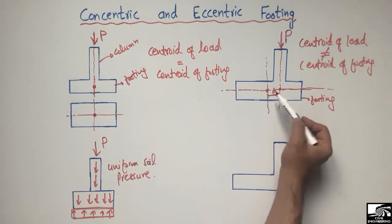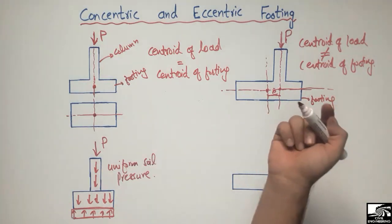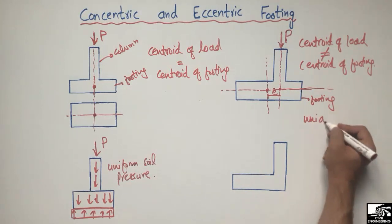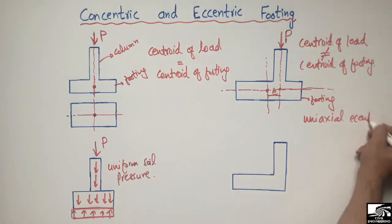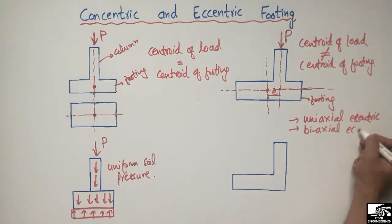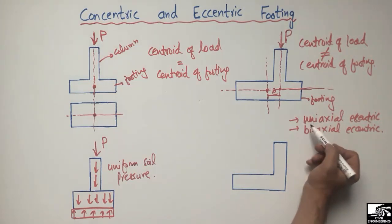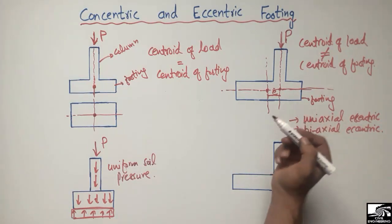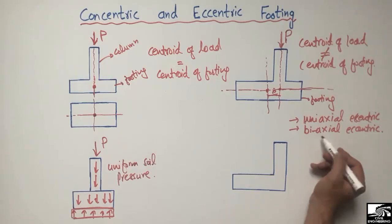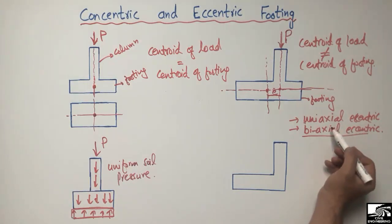The centroid of load is not equal to the centroid of footing, so eccentricity is created. We also have two types of eccentric footing: one is called uniaxial eccentric footing and the other is called biaxial eccentric footing. When we have eccentricity only in the x or y direction, we call it uniaxial — eccentricity in one direction only. If we have eccentricity in both the x and y directions, we call it biaxial eccentric footing.